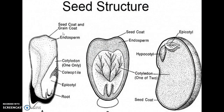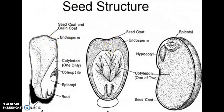Here is the diagrammatic representation of the seed structure. All seeds are covered by a protective outer layer of dead cells known as the seed coat or grain coat. Then comes the endosperm, which provides food for the developing embryo in endospermic seeds such as wheat, maize, and castor. In the case of legumes, which are non-endospermic seeds, the cotyledons nourish the developing embryo.